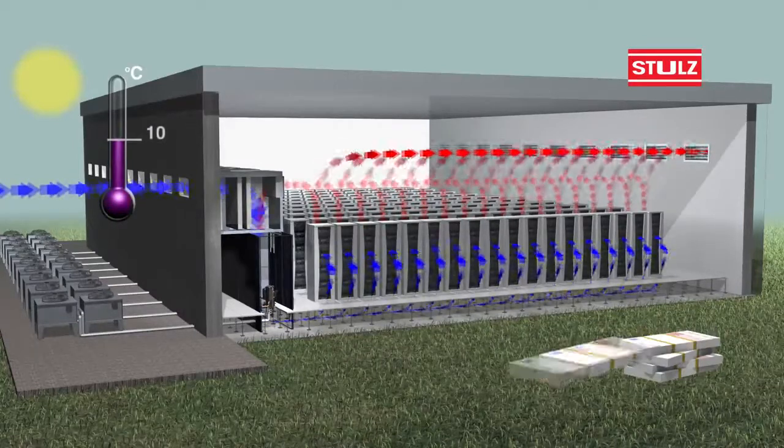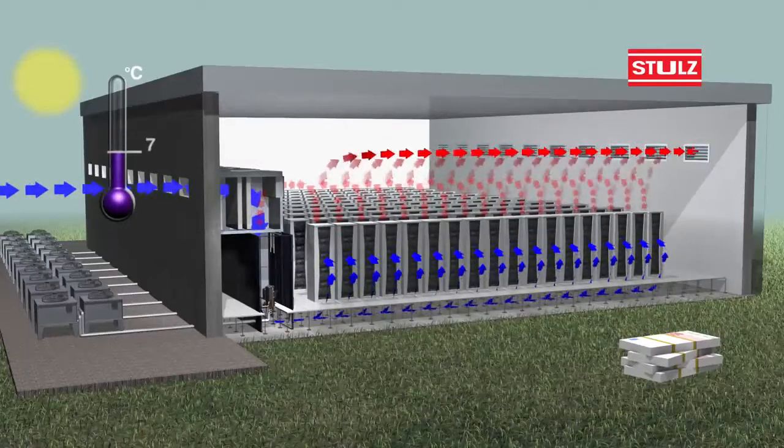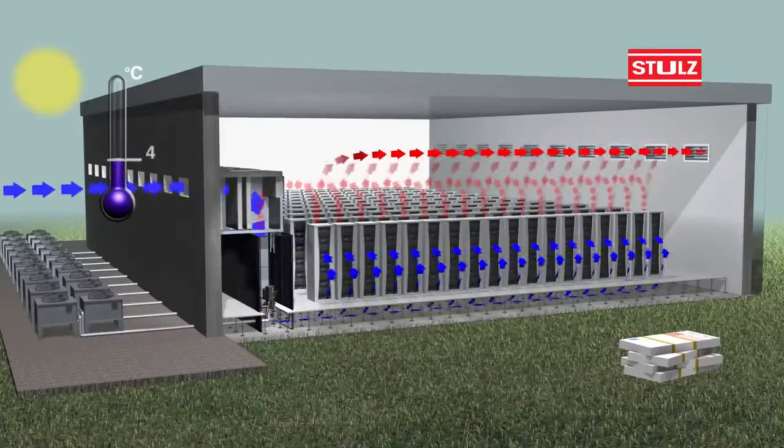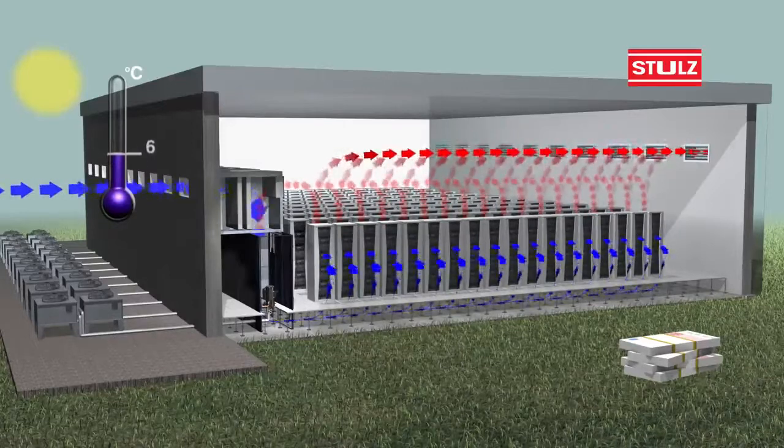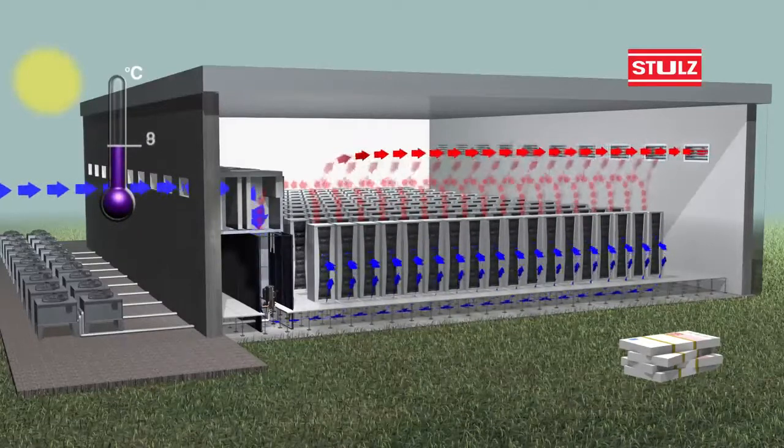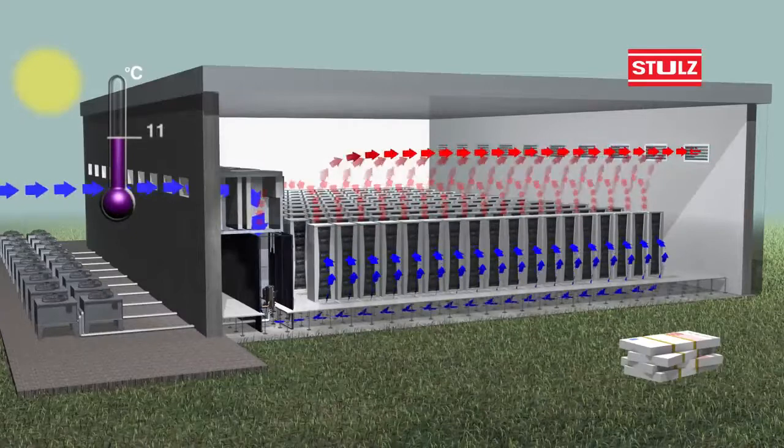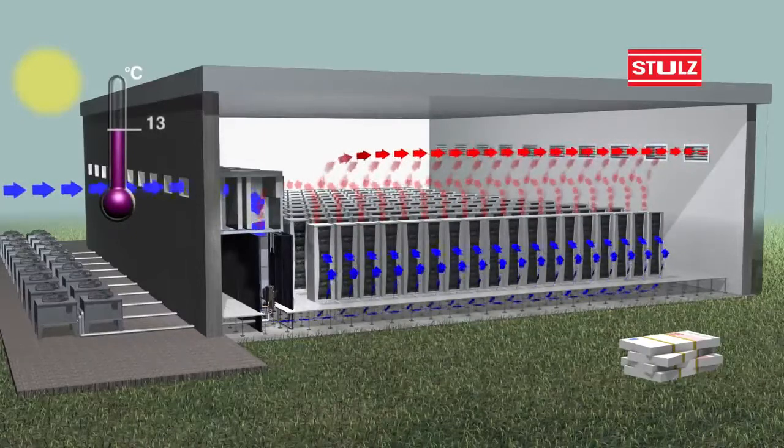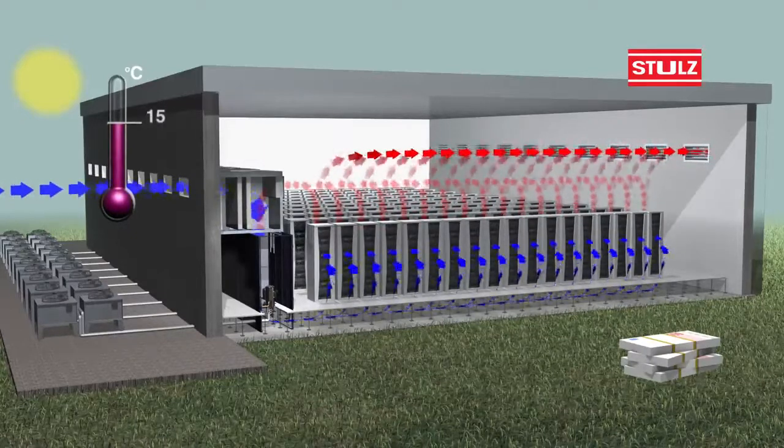At outside temperatures below 17 degrees Celsius, our system runs in a mix mode using both outside air and recirculating air. The required quantity of warm air from the data center is combined with outside air to achieve precisely the right room temperature.